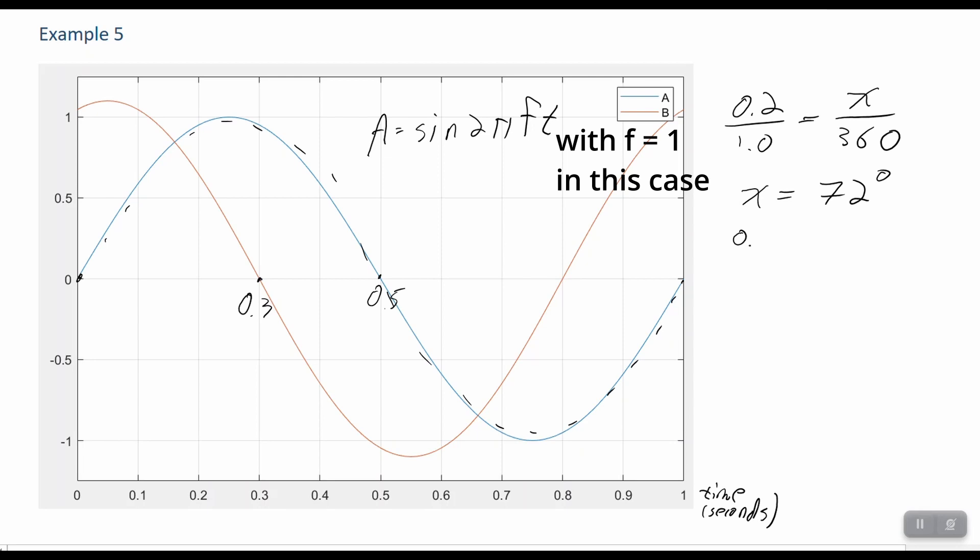We can do the exact same thing. We can do 0.2 over 1.0 equals x. Let's call it y over 2 pi and solve for y. I'm not going to do that. I'll let you plug that number into your calculator. But we see here x is 72 degrees. So if A is sine 2 pi f t, B is equal to 1.1, there's the magnitude difference, sine 2 pi f t plus 72 degrees. And again, that should be in the radians number for the proper equation.